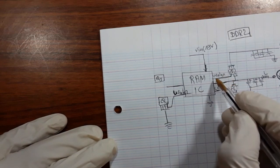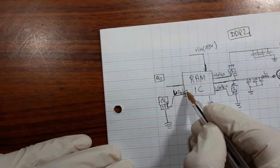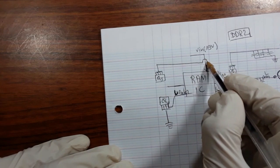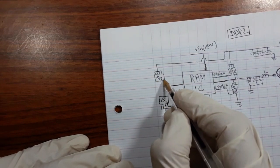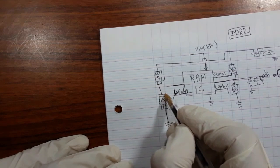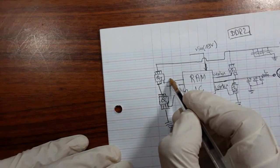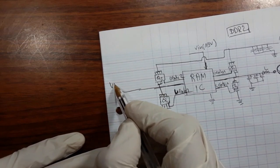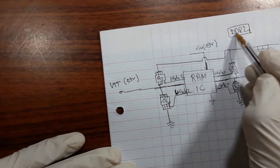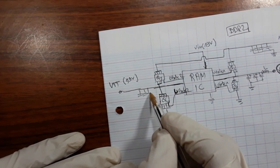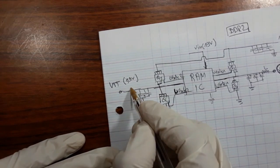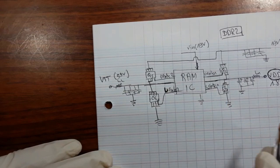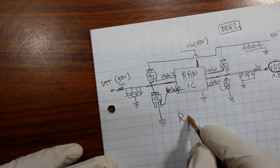Here we have the lower gate 2. This MOSFET is connected to the 19-volt source, and the source connects to the next MOSFET. Here we have the upper gate 2. We get the VTT output, equal to 0.9 volts for DDR2. We have capacitors connected to ground and coils L1 and L2. This is the main component of the RAM circuit.